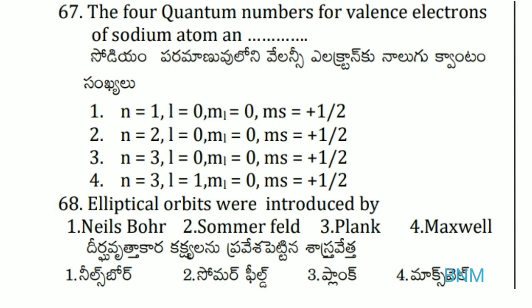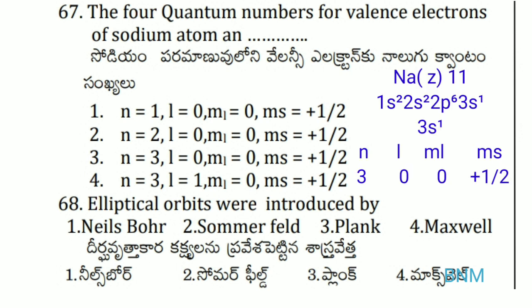The four quantum numbers for the valence electron of sodium atom: sodium's atomic number is 11, and the valence electron is in the 3s orbital. So n=3, l=0, ml=0, ms=+1/2. These are the four quantum numbers for sodium's valence electron.